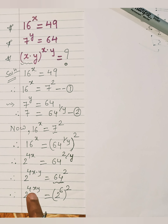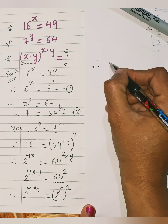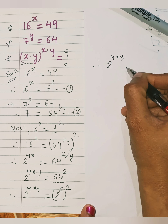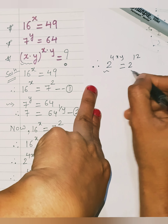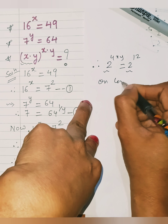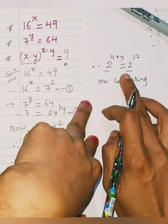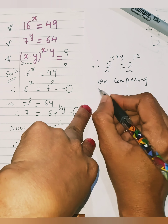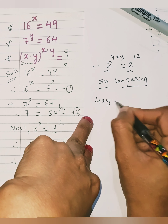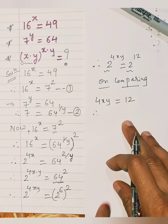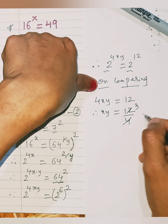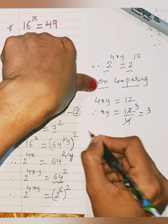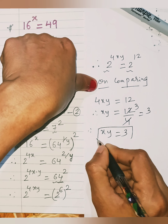We now have 2 raised to 4xy equals 2 raised to 6, whole raised to 2, which simplifies to 2 raised to 12. Since both sides have the same base, we compare the exponents: 4xy equals 12. Solving this gives xy equals 12 divided by 4, which equals 3.